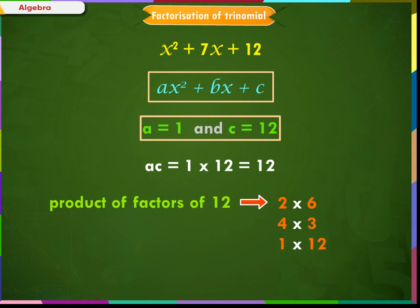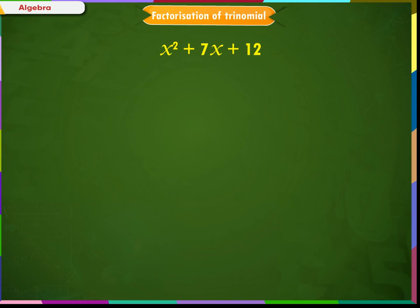In these combinations of numbers, 4 and 3 are such numbers which when added, we get 7. 7 is present in the middle term. Therefore, our expression can be written as x² + 7x + 12 = x² + 4x + 3x + 12. Now, we can group the first two terms and the last two terms.